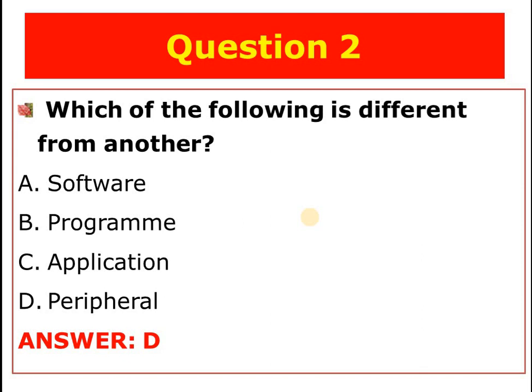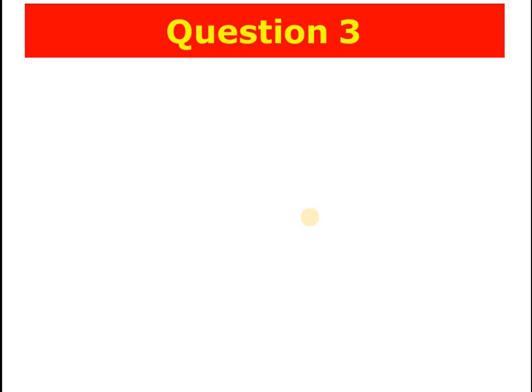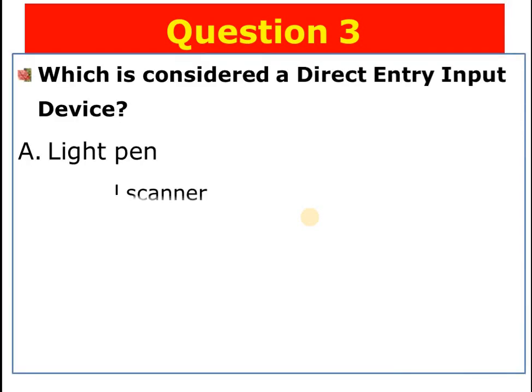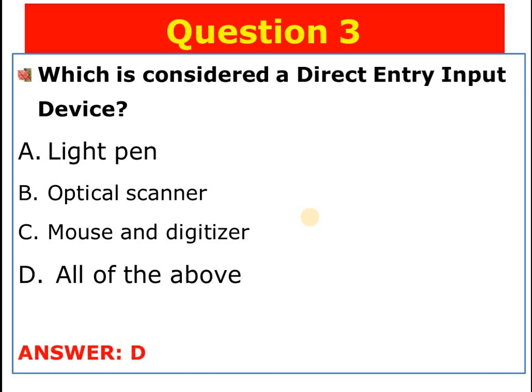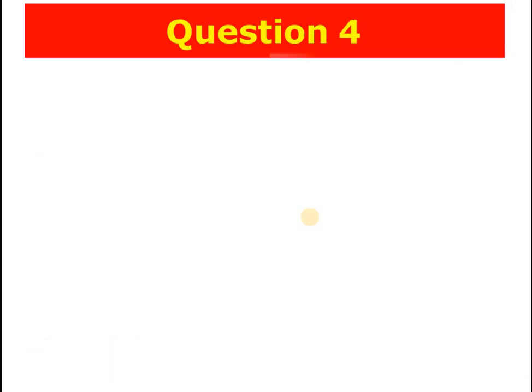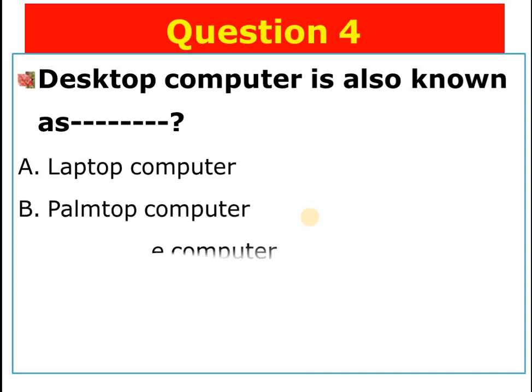Question number three: What is considered a direct entry input device? A) Light pen, B) Optical scanner, C) Mouse and digitizer, D) All of the above. The answer is D — light pen, optical scanner, and mouse and digitizer are all direct entry input devices.